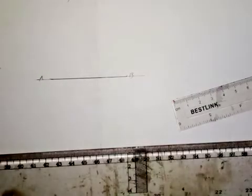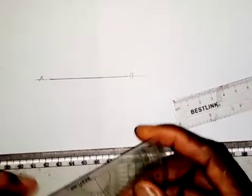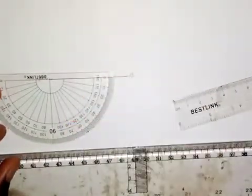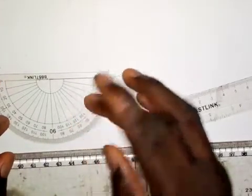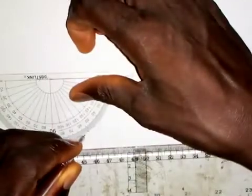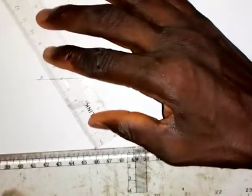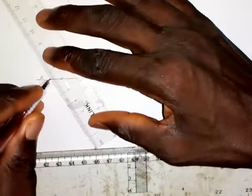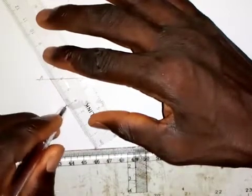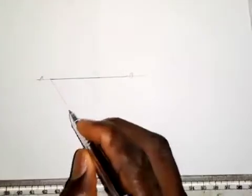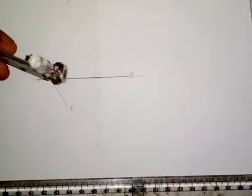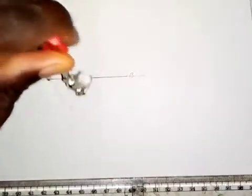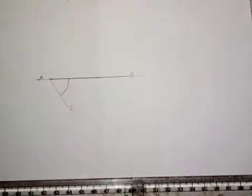The next thing I'm going to do is to take my protractor and set it at point A. I'm going to take angle 60 degrees here. I'm going to draw a short line from A passing through this point. This line is line AC, and this angle here is 60 degrees, which is the vertical angle that we are given.